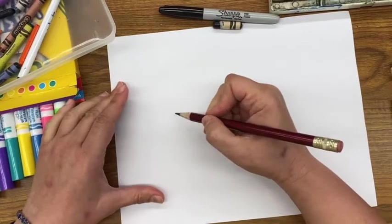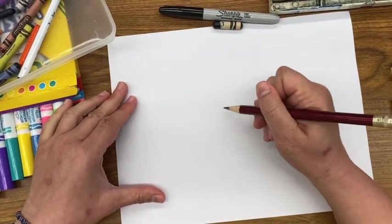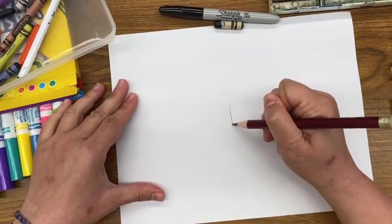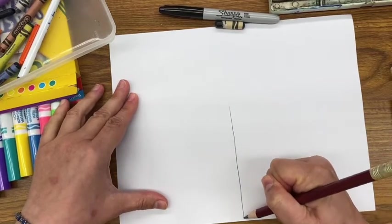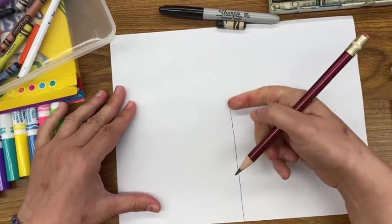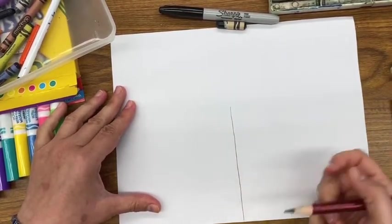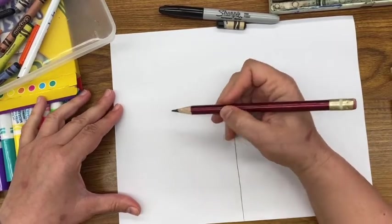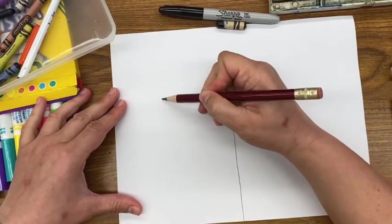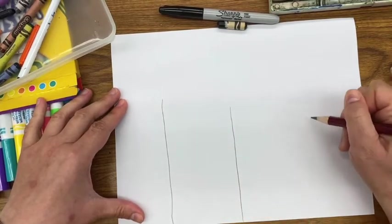Let's start somewhere in the middle, and I'm going to draw three vertical lines. They can be longer than the other, shorter than the other, or the same length. It's up to you.